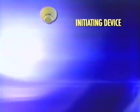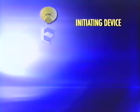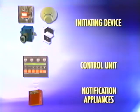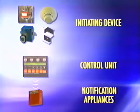At its most basic, a fire alarm system consists of an initiating device, such as a smoke detector, heat or flame detector, or a water flow device. When activated, the device sends a signal to a control unit, which activates notification appliances that alert occupants and trained response personnel.